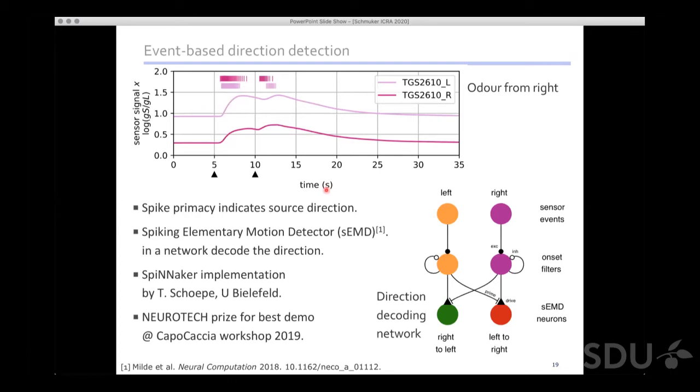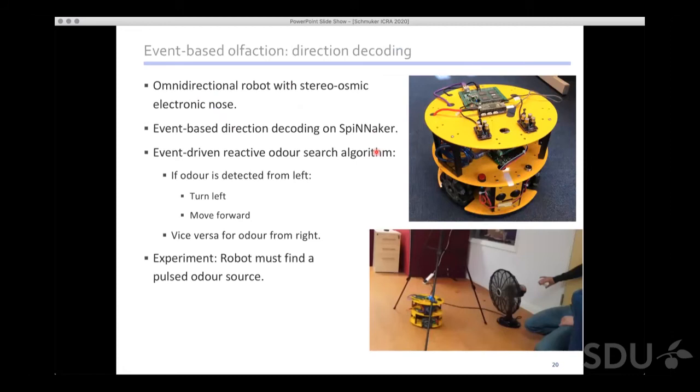We took this to the Capocaccia workshop in neuromorphic cognition last year. We teamed up with Torben Schirpe from Bielefeld University, who came up with a direction decoding network based on work by Moritz Müller - the Spiking Elementary Motion Detector. We hooked this up to those spikes and could do direction detection pretty robustly at Capocaccia. We won the Neurotech prize for the best demo, which was quite a happy time for everybody involved.